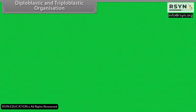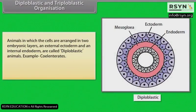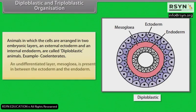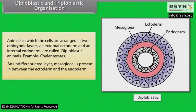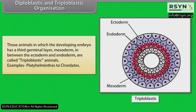Animals in which the cells are arranged in two embryonic layers — an external ectoderm and an internal endoderm — are called diploblastic animals. Example: coelenterates. An undifferentiated layer, mesoglea, is present in between the ectoderm and the endoderm. Those animals in which the developing embryo has a third germinal layer, mesoderm, in between the ectoderm and endoderm are called triploblastic animals. Example: platyhelminthes to chordates.